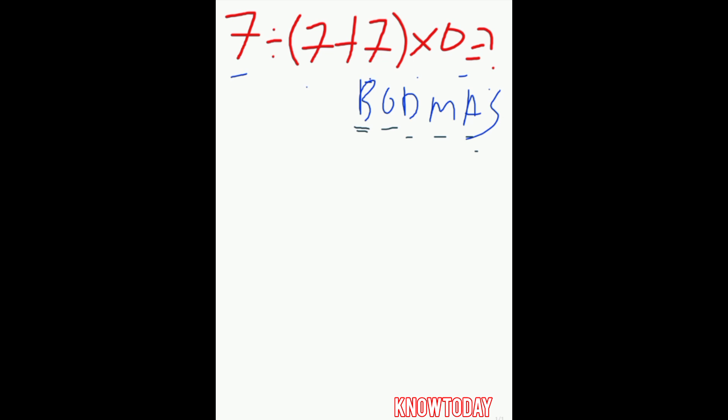The quiz is 7 divided by bracket 7 plus 7, close bracket, times 0 equals what?